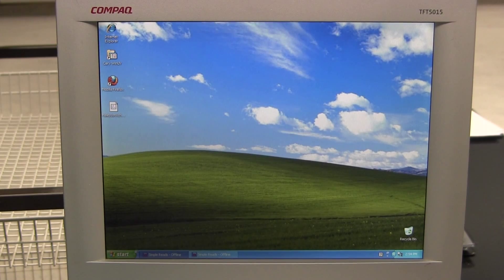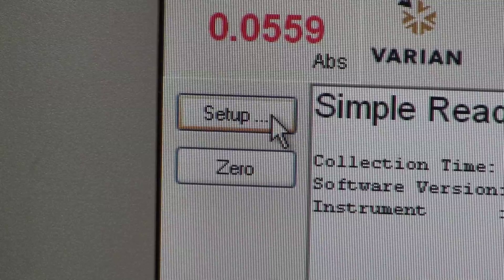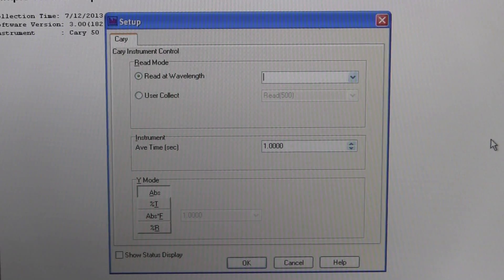Open up the program located under the start menu, called Simple Reads. Press the setup icon in the upper left side of the window, set the wavelength to read the desired absorbance, and press OK.